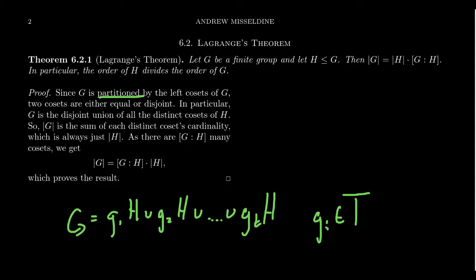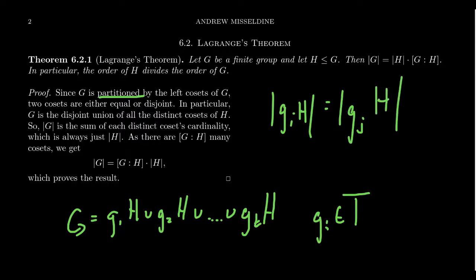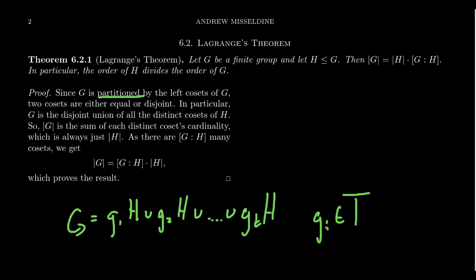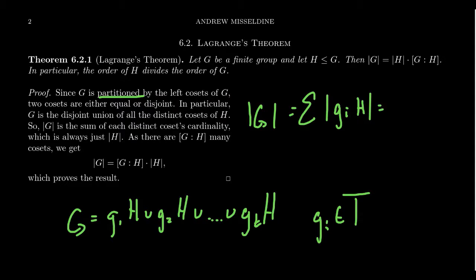G is a disjoint union of all the cosets, so it looks like G₁H ∪ G₂H ∪ … ∪ GₜH, where each Gᵢ is an element of the transversal T. Each and every one of these cosets has the same size. Because of that, the order of G is going to be the sum of the sizes of all these cosets, which is just some number times the order of H.